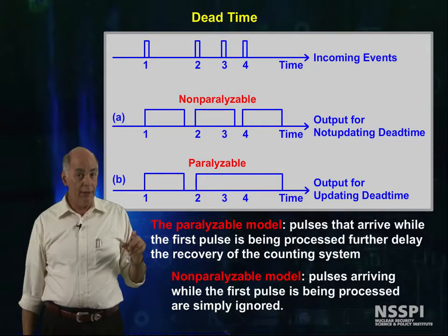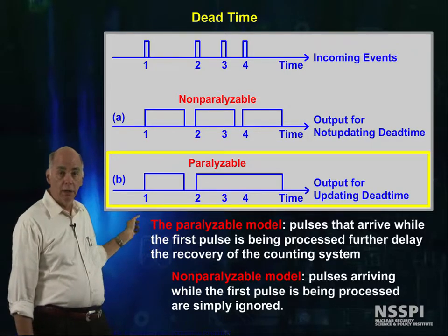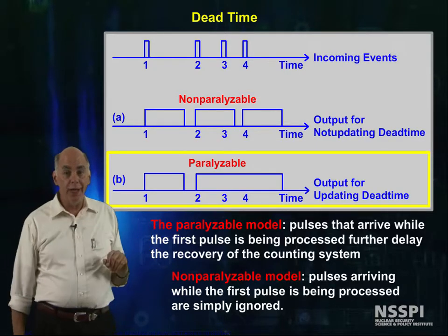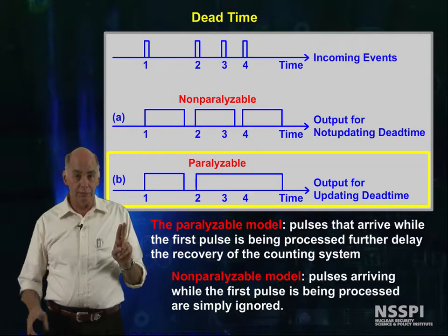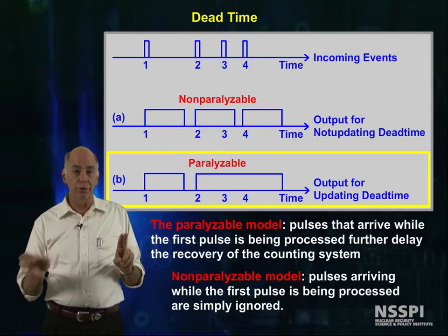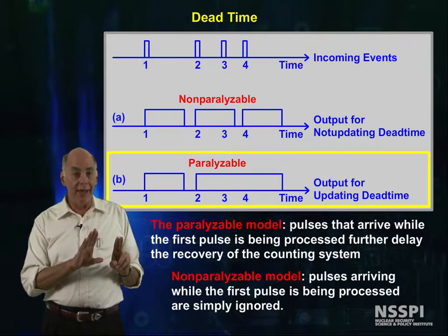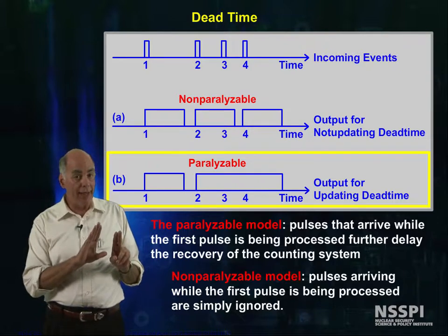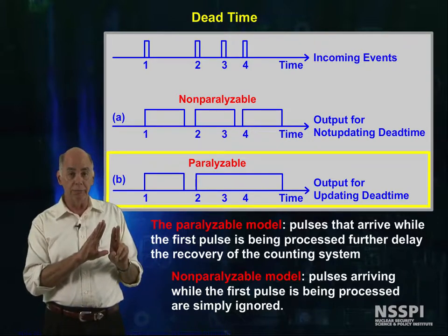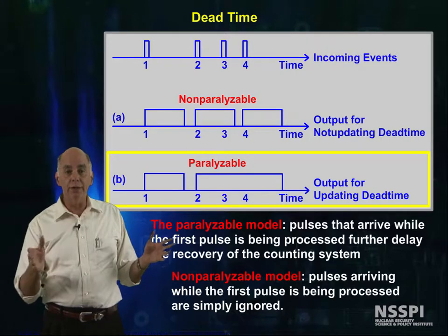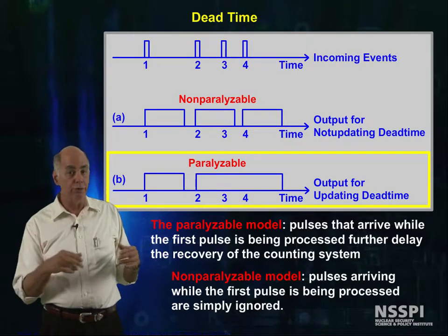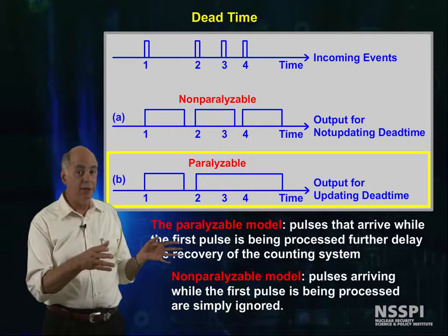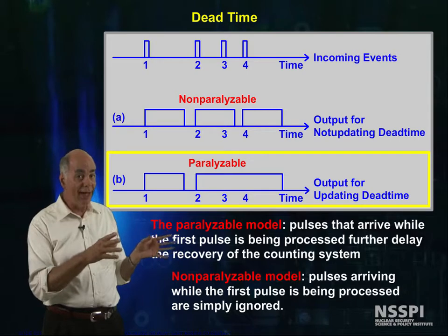Now let's look at curve B. Things are the same with pulse 1. Pulse 2 arrives and processing starts. Pulse 3 arrives and it is not counted because pulse 2 is being processed, but pulse 3 lengthens the processing time. Pulse 4 arrives and it's not counted either.